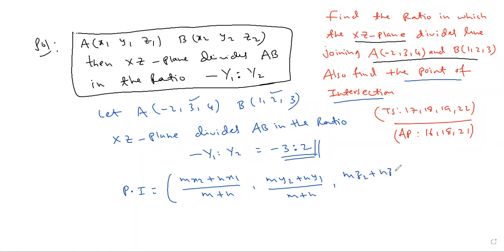Which is equal to, where M is -3 and N is 2. X1, Y1 from the A point (X1, Y1, Z1), and B is X2, Y2, Z2.